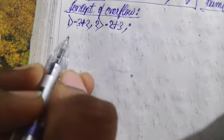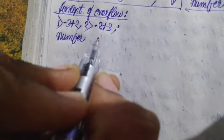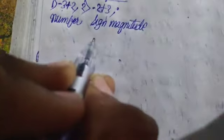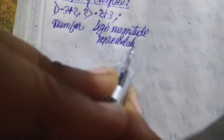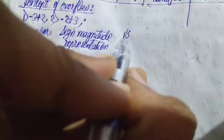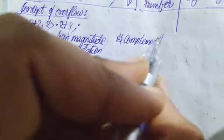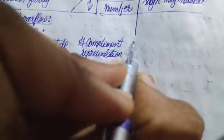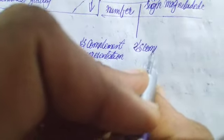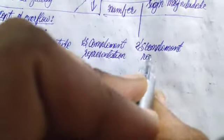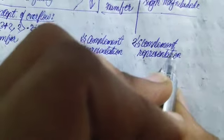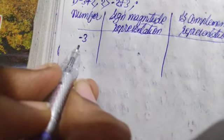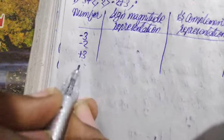In the first column let us provide the number, and in the second column let us represent the sign magnitude representation. In the third column let us provide the one's complement representation, and in the fourth column let us have the two's complement representation. So we have minus three, minus two, plus three, and plus two.